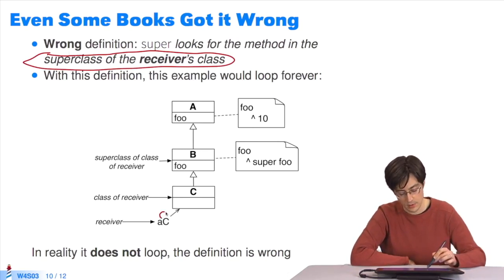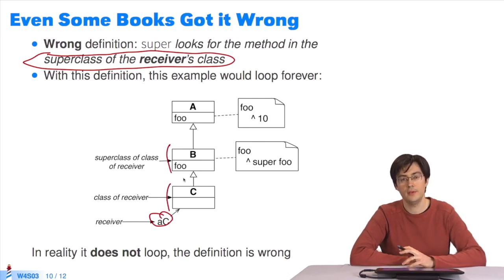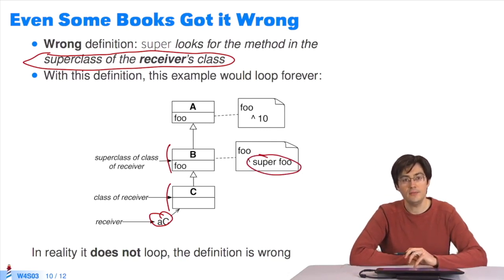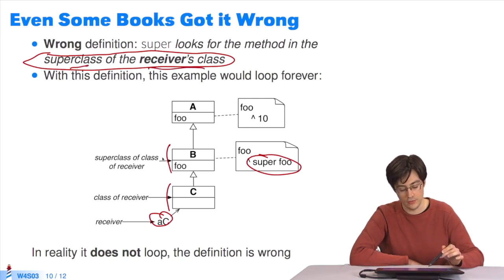As proved by the example shown, if you take a C as the receiver, its class is C. The receiver's super class is therefore B. If I come down here and execute the command super foo, if the definition given by the book is applied, we would send the message foo to super, and the foo method executed would be the one in the super class of the receiver's class. In other words, this one. It would send foo to super over and over again in an infinite loop. So the definition is wrong. In practice, this example functions perfectly.